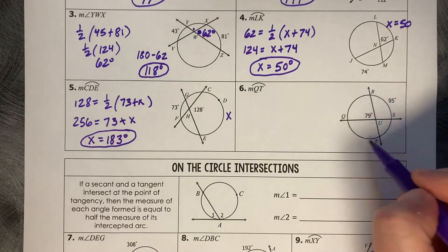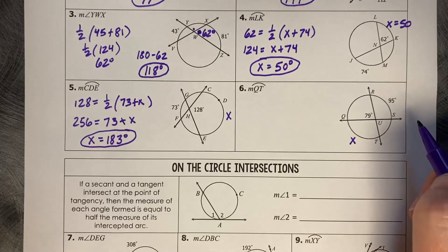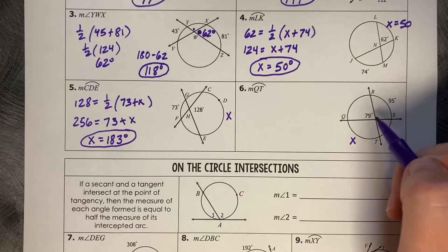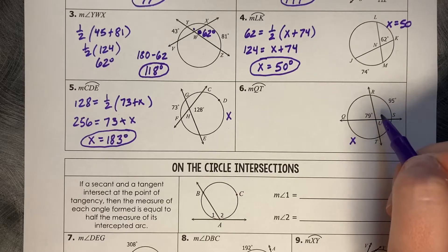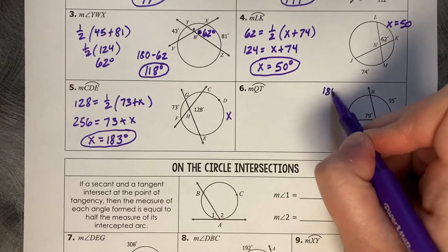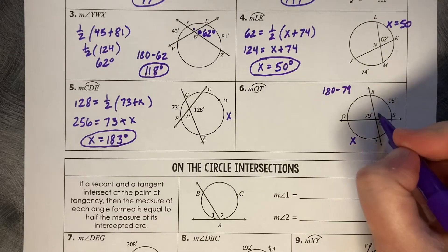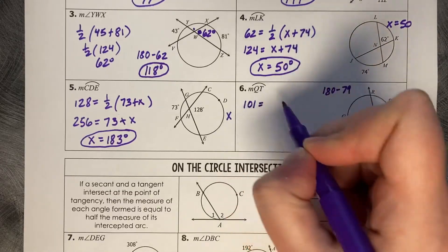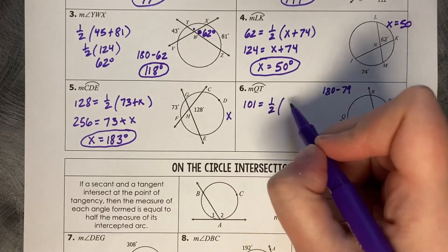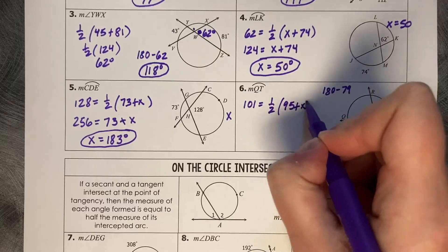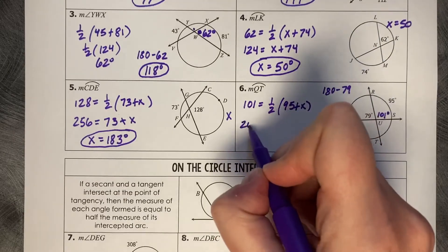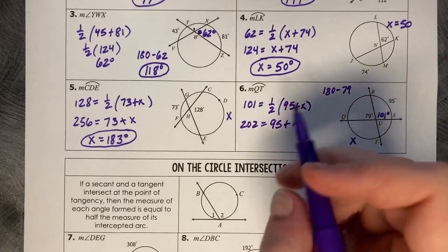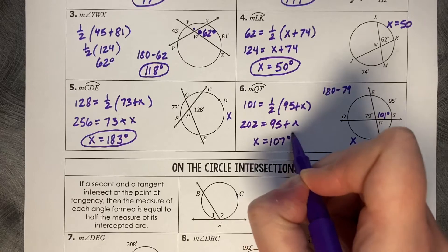For arc QT, again that's X, and we've got 95 but we don't know this angle measure. So 180 minus 79 gives us 101 degrees. Then 101 degrees equals a half of 95 plus X, which gives 202 equals 95 plus X, minus 95, so X equals 107 degrees.